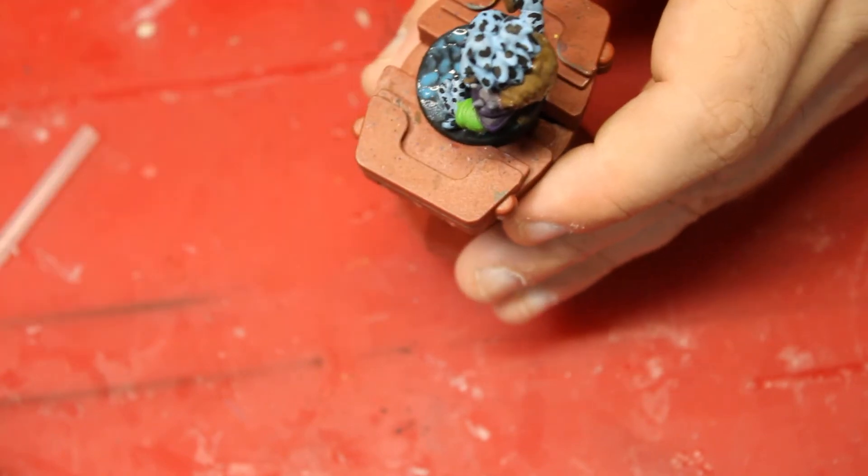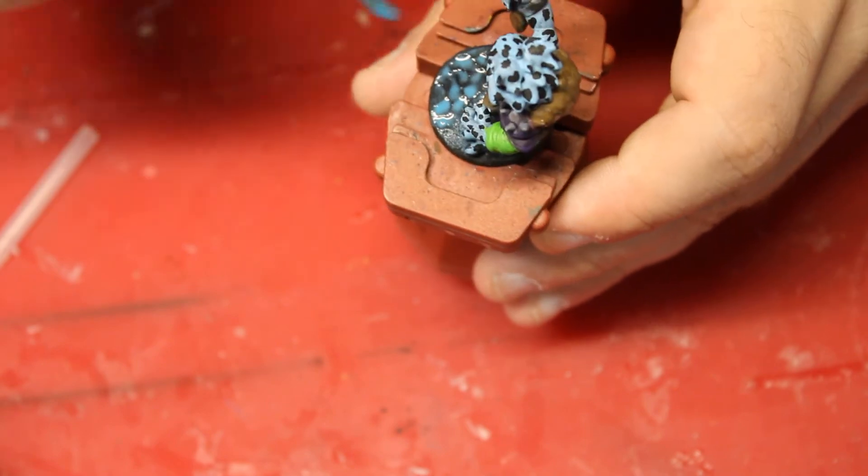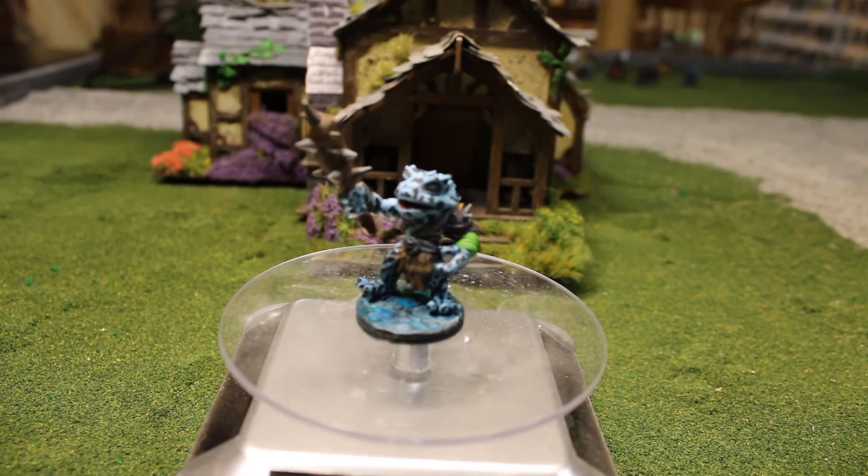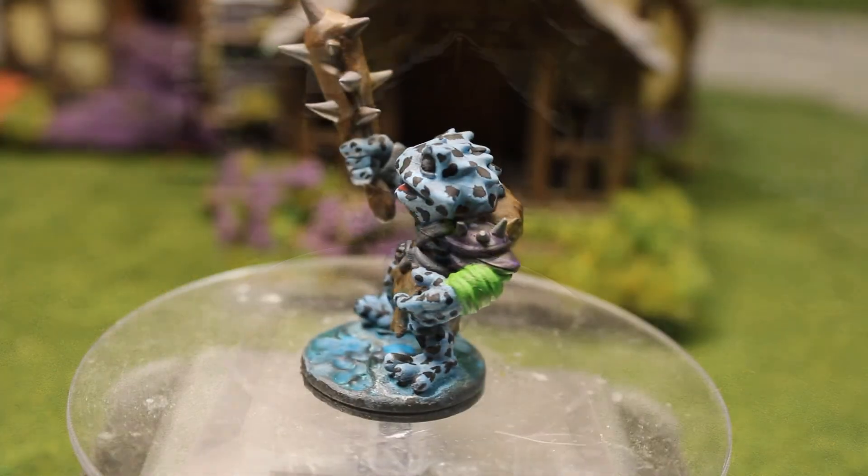I also mixed in some of the brown and green into the turquoise to kind of make it that murky looking kind of water. Alright, now that's done. The warrior is all good and taken care of. So let's just say the war chief is all good and taken care of.